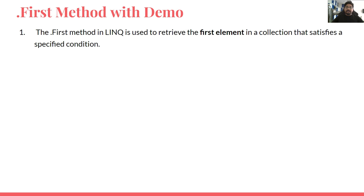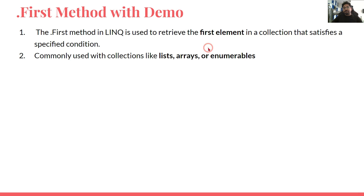The dot First method in LINQ is used to retrieve the first element in a collection that satisfies a specified condition. As the name suggests, dot First pulls the very first element from a collection. Collections commonly include lists, arrays, and any IEnumerable like a DataTable. If you want to pull the very first element, you use the dot First method.